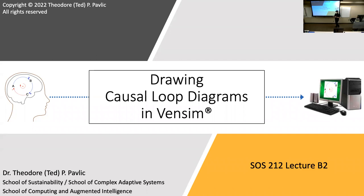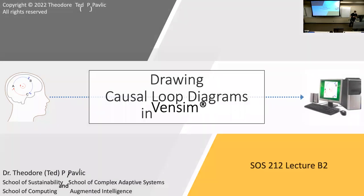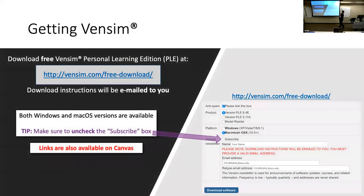Let's go ahead and get started. We've been introducing causal loop diagrams in the abstract, and today we're going to be learning how to draw them using Vensim as our tool of choice. If you have Vensim on your own laptop that's great; otherwise, if you're in class, all of these machines — if you log in with your ASU ID — should have Vensim on them as well.